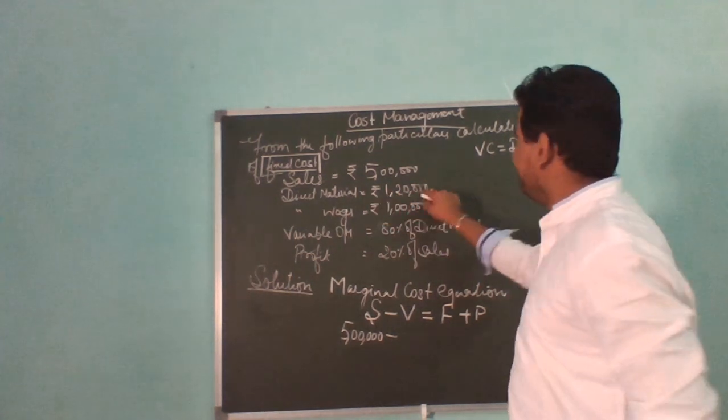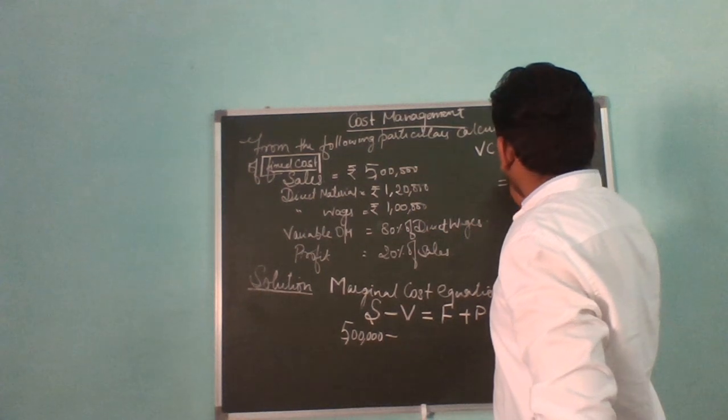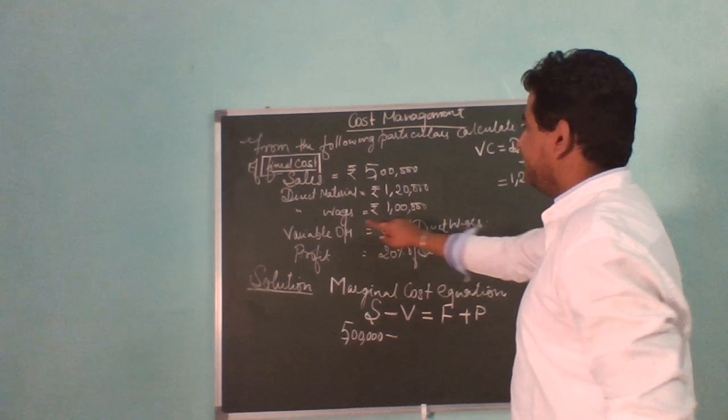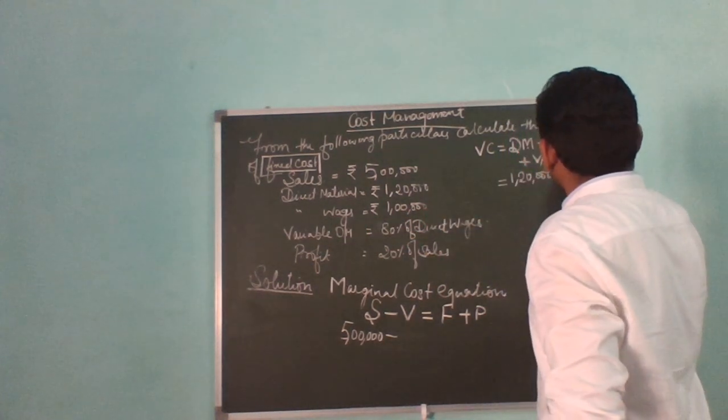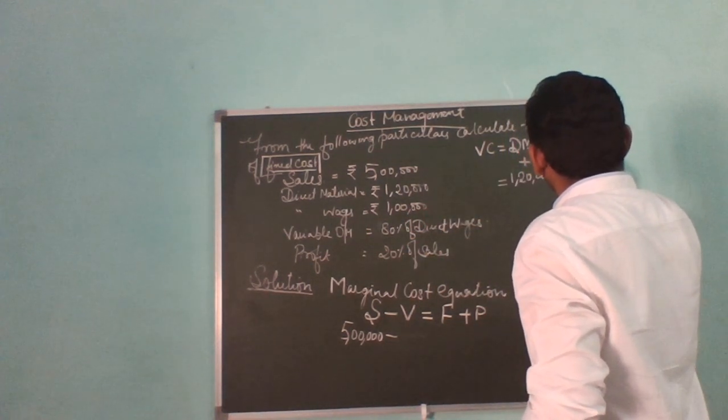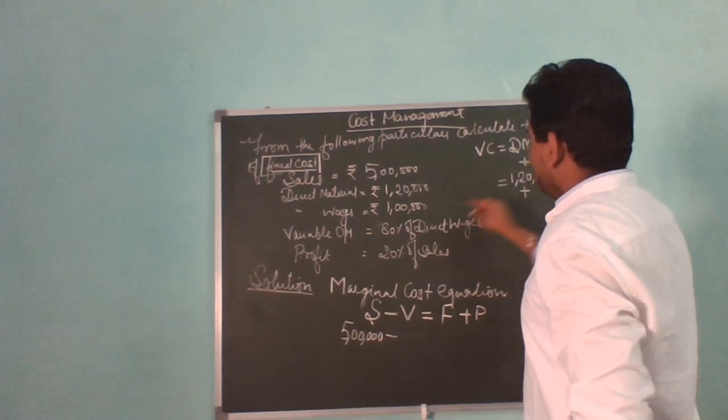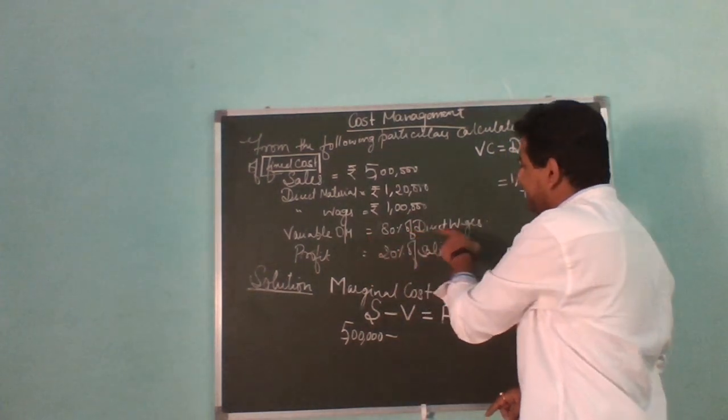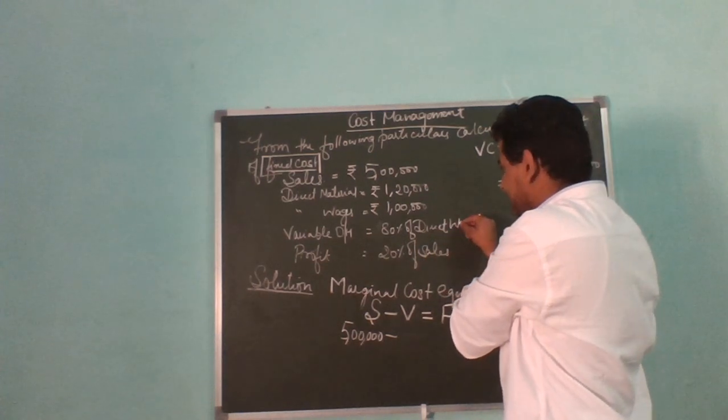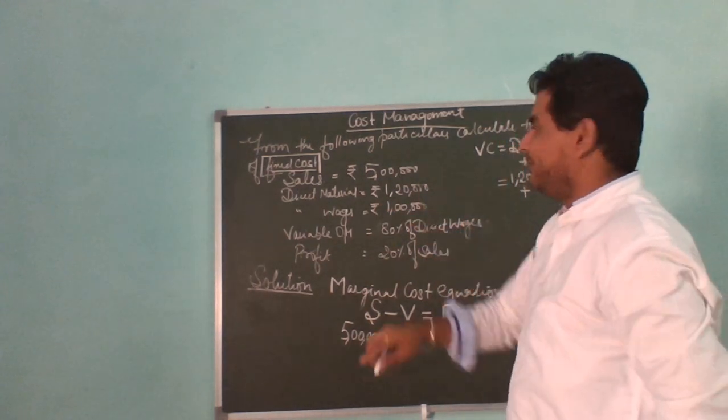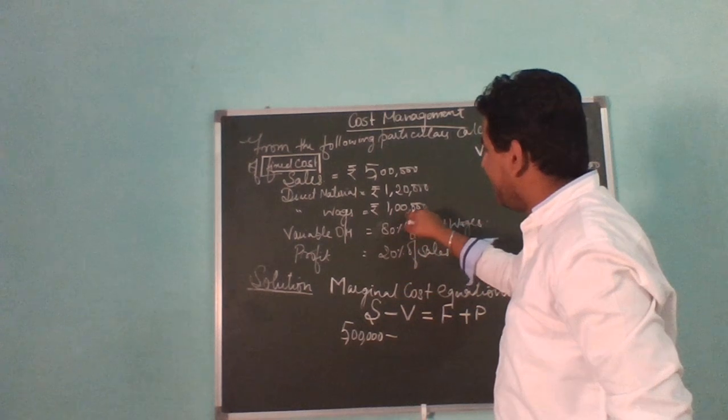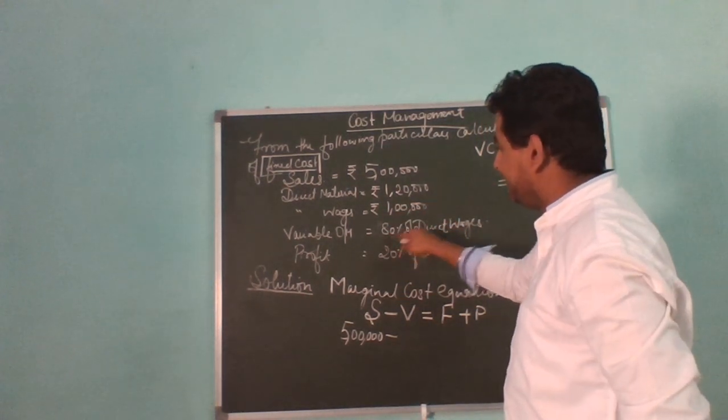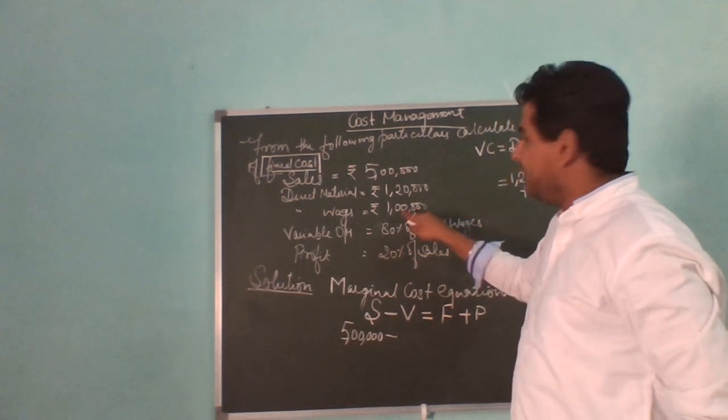Variable cost: direct material given as 1 lakh 20,000, plus direct wages 1 lakh rupees, plus variable overheads. Variable overheads given is 80% of direct wages. Direct wages is one lakh rupees, so variable overheads equals 80,000 rupees.